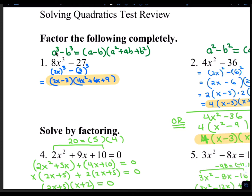A in the formula is going to be replaced with 2x, and B in the formula will be 3. So A minus B becomes 2x minus 3. A squared in the formula becomes 4x squared. A times B is 2x times 3, which is 6x. And B squared is 3 squared, which is 9. So your answer is 2x minus 3 times 4x squared plus 6x plus 9.